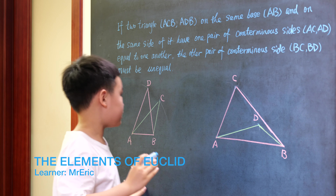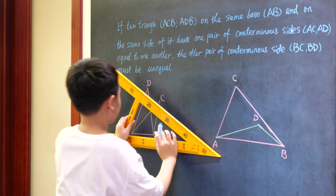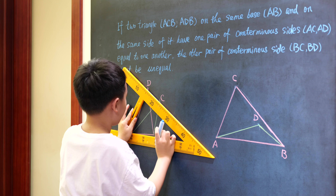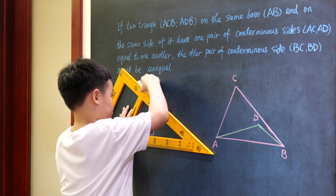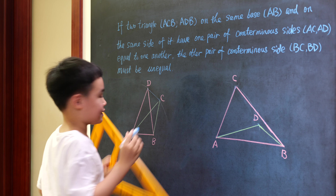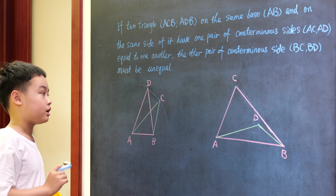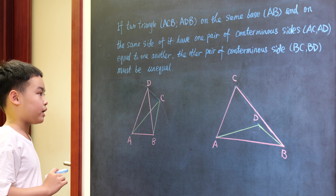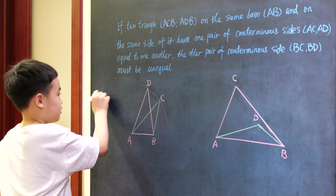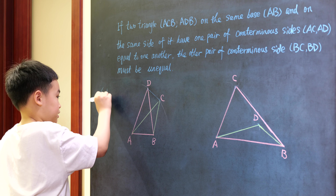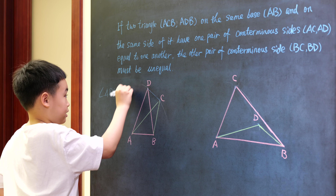Point D could be anywhere and point C could be anywhere. Connect D and C. Now because AD is equal to AC, triangle ADC will be isosceles. So angle ADC will be equal to angle ACD.